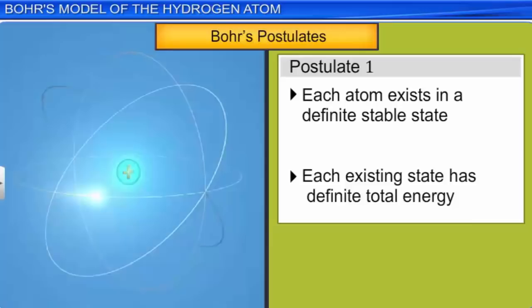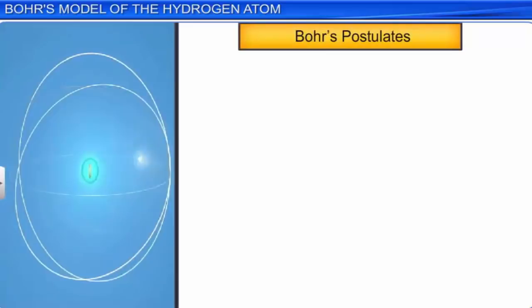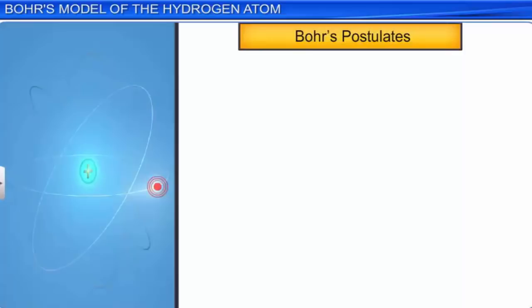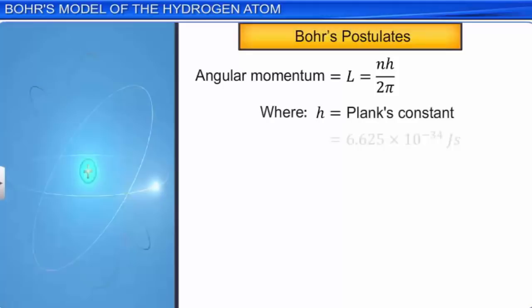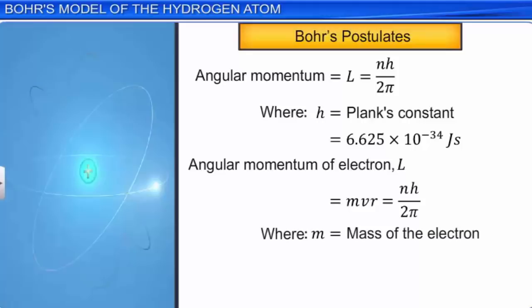According to Bohr's second postulate, the electron revolves around the nucleus only in those orbits for which the angular momentum L is an integral multiple of a constant equal to nh/2π, where h is Planck's constant equal to 6.625 × 10⁻³⁴ joule-seconds. Therefore, the angular momentum L = mvr = nh/2π, where m is the mass of the electron, v is its velocity, r is the radius of its revolving orbit, and n is an integer — equation 1.